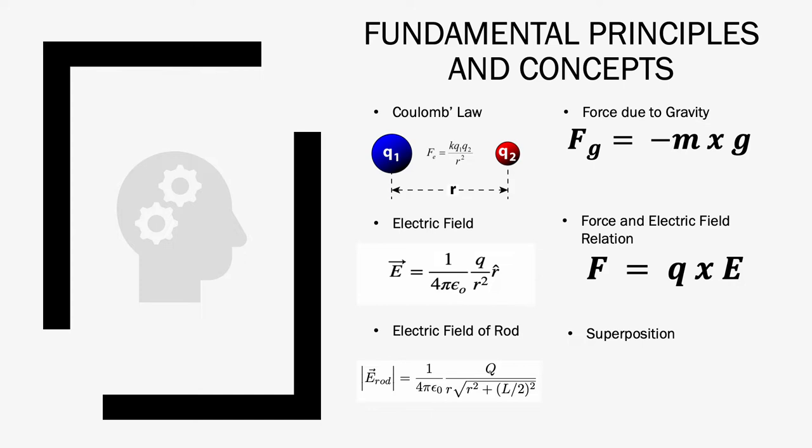which is an equation that calculates the electric field of a charge from a certain observation location, the electric field formula for a rod, which is used to find the field from a line of charge, the force due to gravity, which is an important concept observed in the experiment, and the relationship between force and electric field.